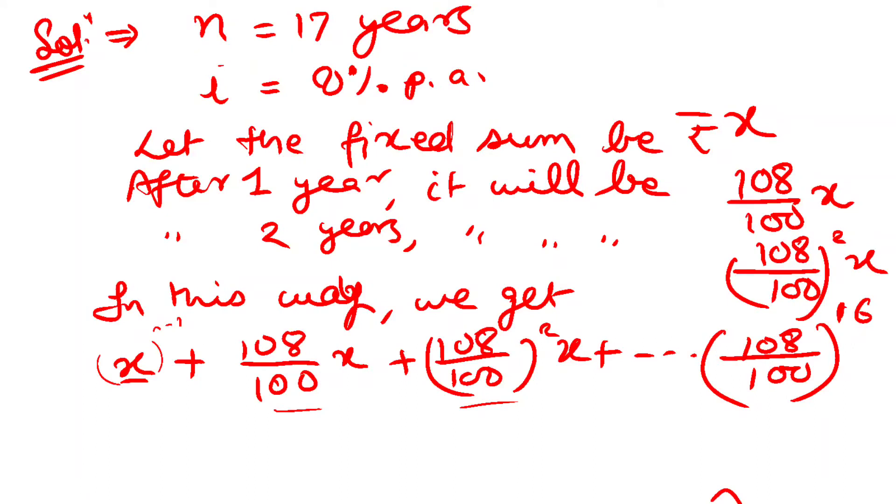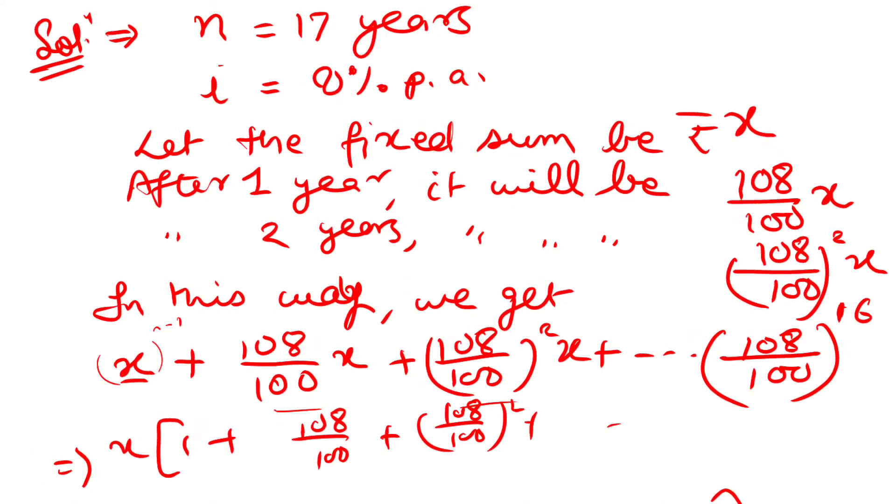So we will use the GP formula: a times (r to the power n minus 1) upon (r minus 1). After taking x common, the series becomes: 1 plus 108 upon 100 plus 108 upon 100 to the power 2, and so on, up to power 16.